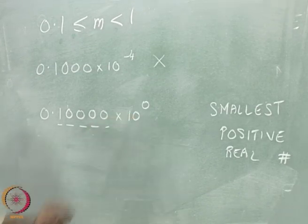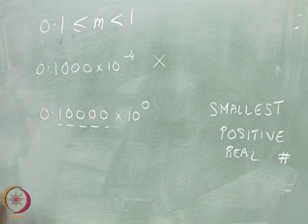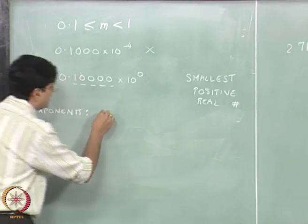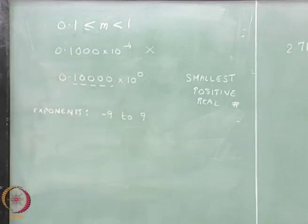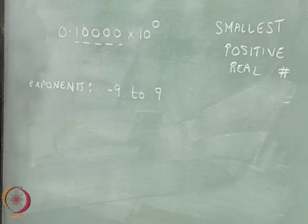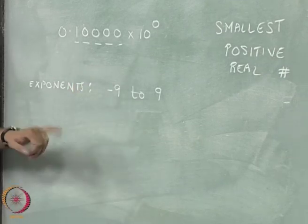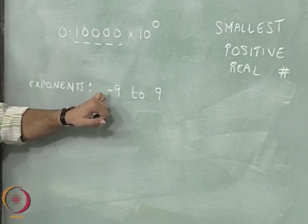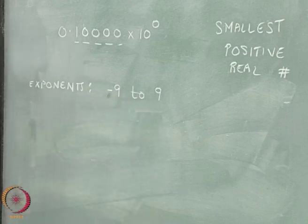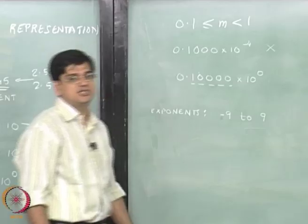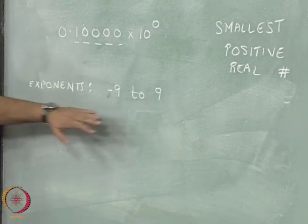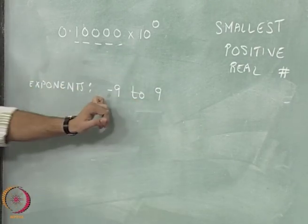If we relax our assumption and allow negative exponents as well, let us say the exponents range from minus 9 to plus 9. However, using a single decimal digit to represent a signed exponent is wasteful of space, so this approach is not ideal for a decimal system. For argument's sake, let us say the allowed exponent ranges from minus 9 to plus 9.